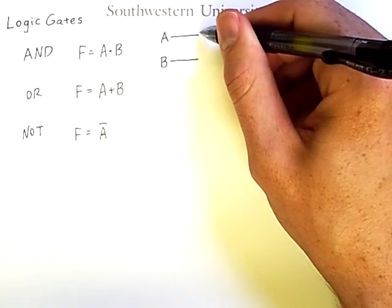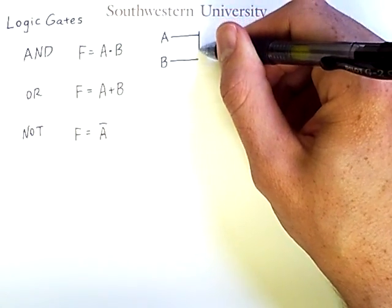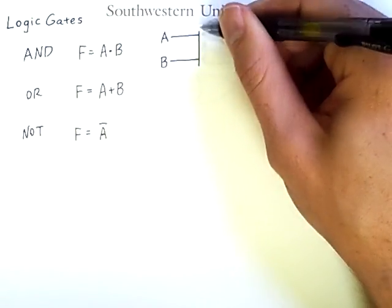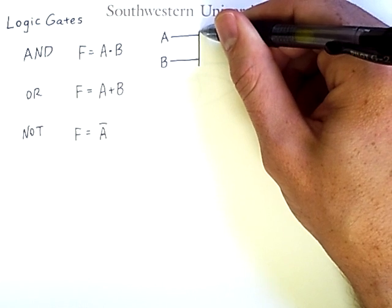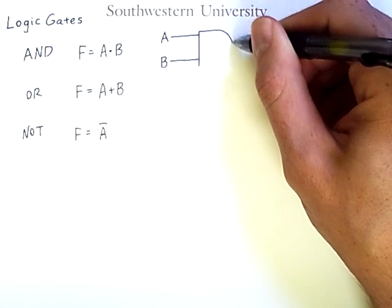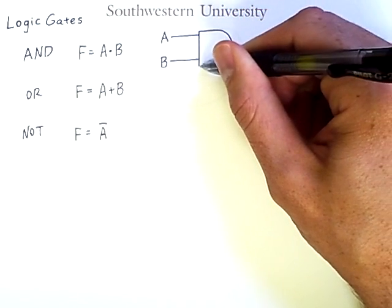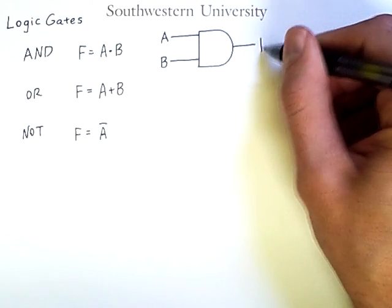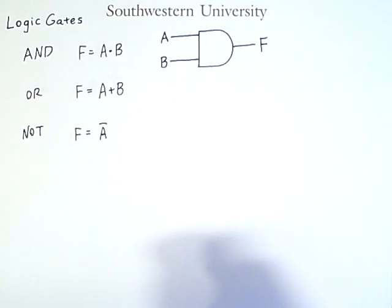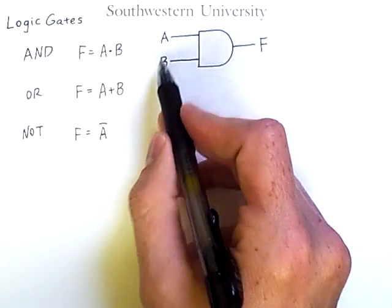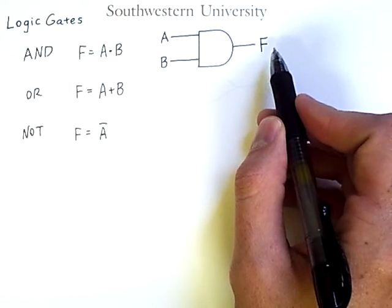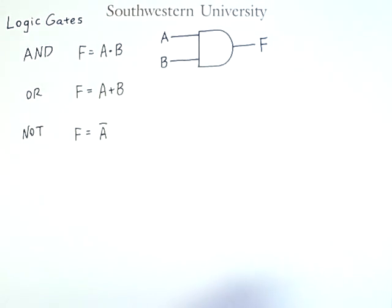these signals simultaneously enter a gate. An AND gate is denoted by a flat line here for input, and then a curved edge where the output signal comes out of the curved portion. So signals A and B enter the gate, and the result that exits is A and B.